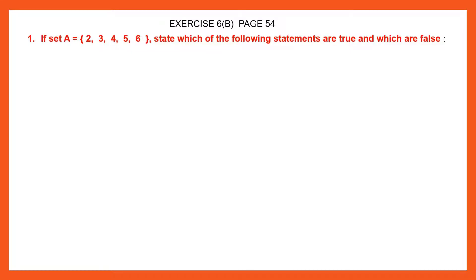Question 1. If set A is equal to {2, 3, 4, 5, 6}, state which of the following statements are true and which are false. We've been given set A and we know what the elements or members of set A are. Now we've been given a few statements and we need to say if those statements are true or false.